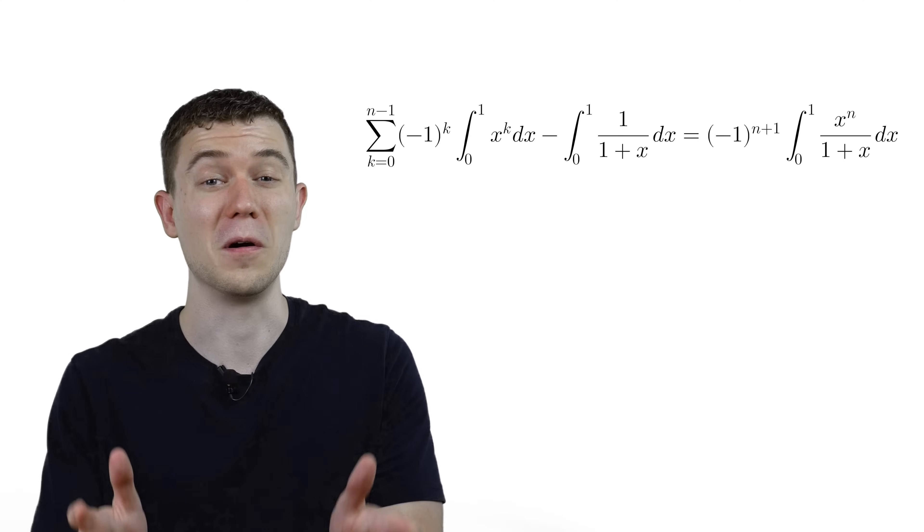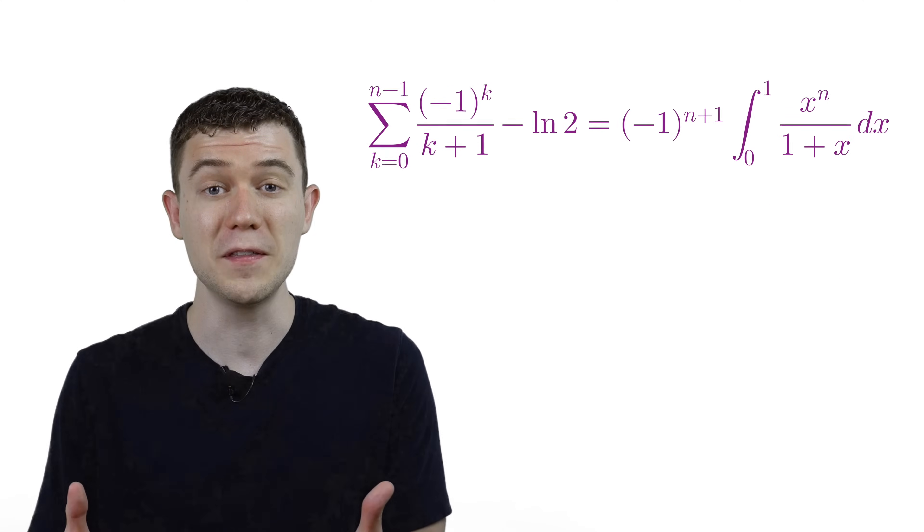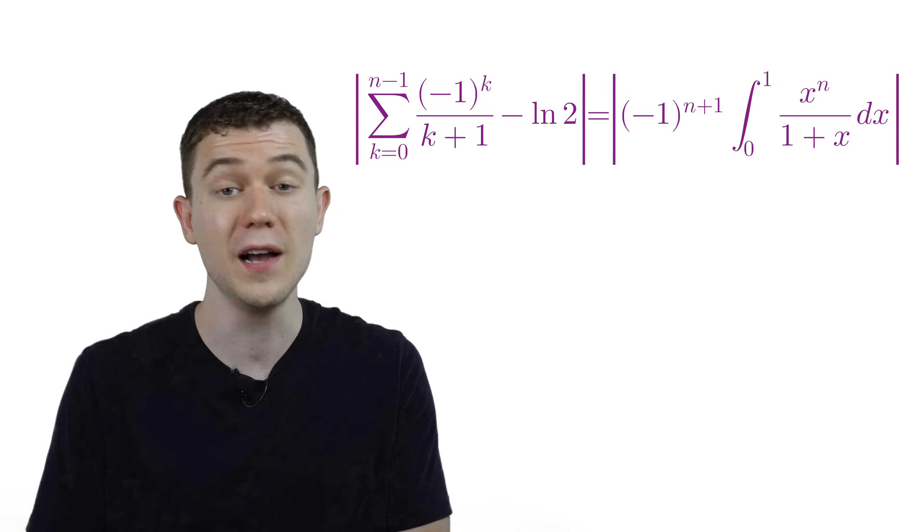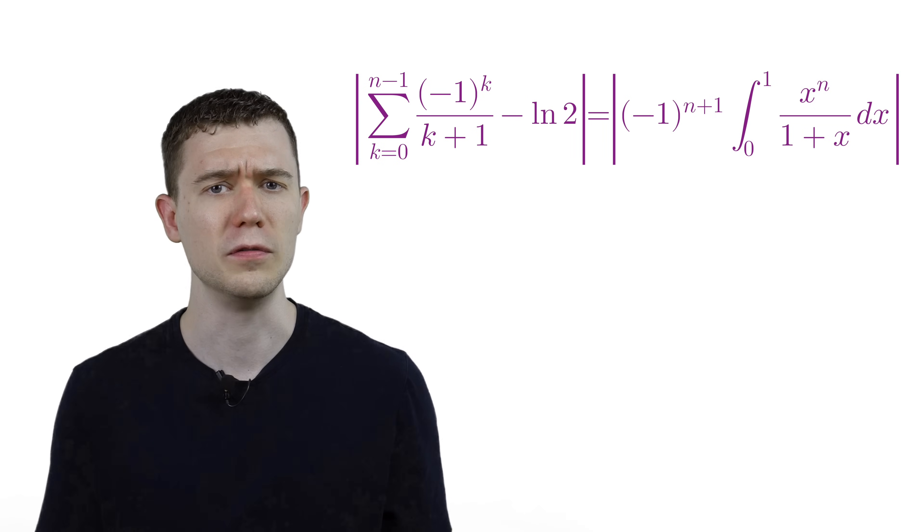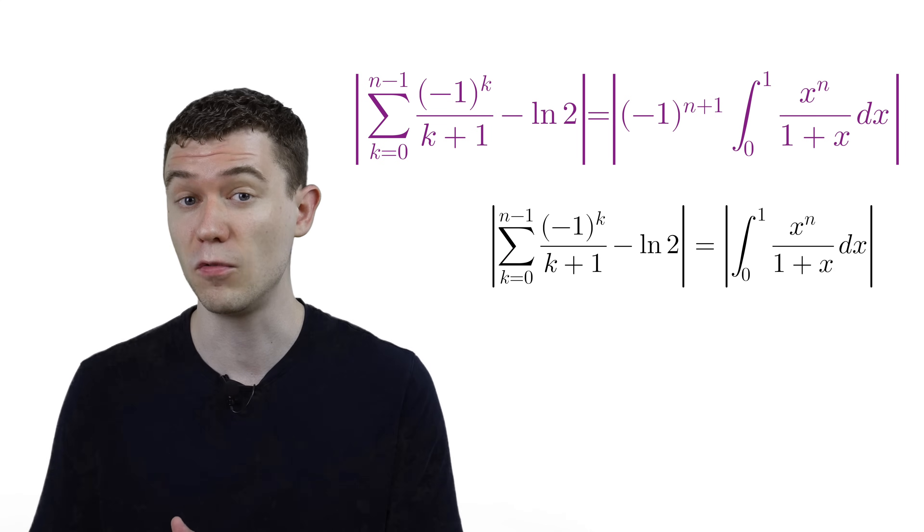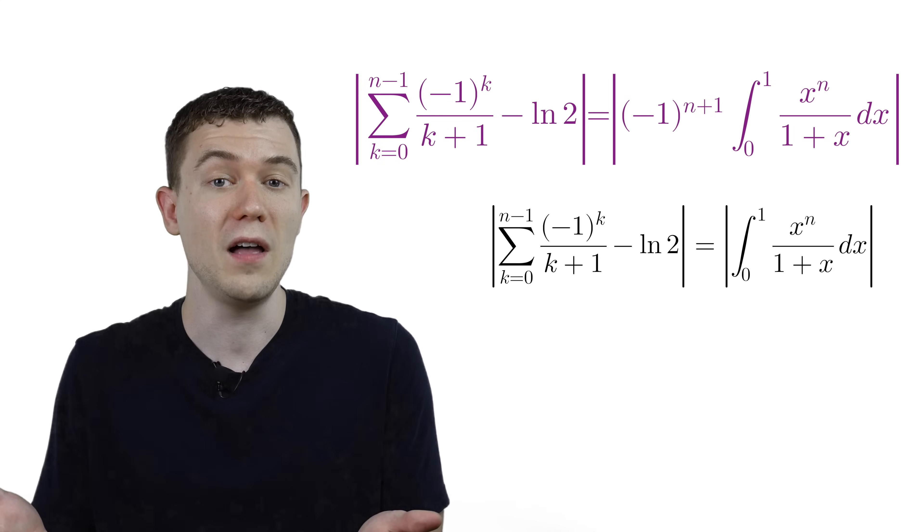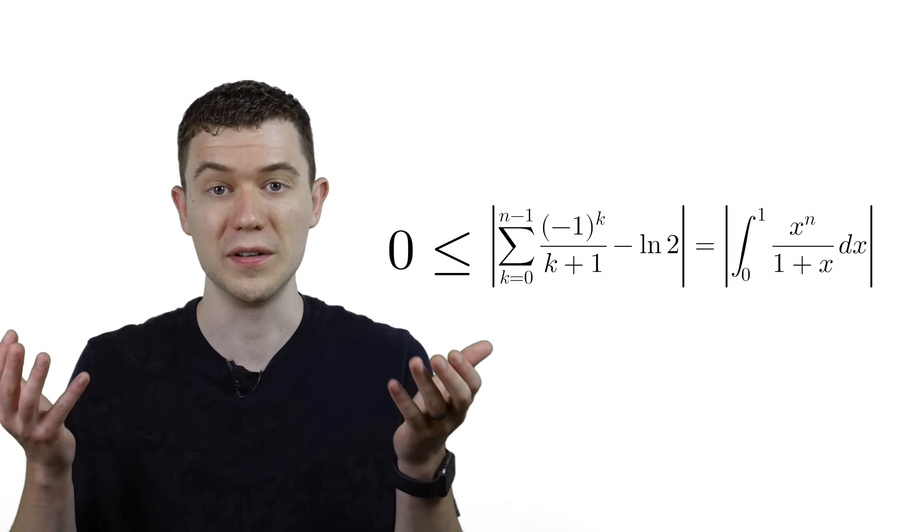Here's the fun part. We have this equality, which means the same thing as the absolute value of the left equals the absolute value of the right. Since we're talking about absolute values, we don't need that negative 1 to the n any longer, and absolute values are always greater than or equal to 0.